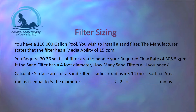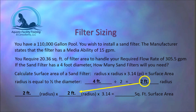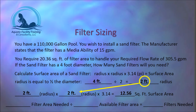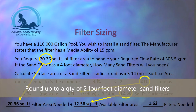Radius is equal to one-half of the diameter. Our sand filter has a 4-foot diameter, so 4 divided by 2 equals 2 — our filter has a 2-foot radius. To calculate the square foot of surface area: 2 times 2 times 3.14 gives us 12.56 square feet of surface area. To determine how many filters we require, we take the total filter area needed (20.36 sq ft) divided by 12.56 sq ft per filter, which tells us we need 1.62 filters — so we round up to 2 filters.